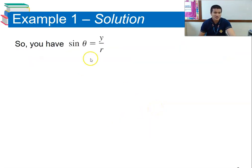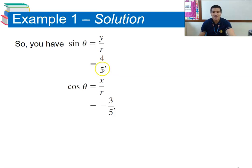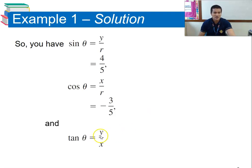Now we can solve for sine, cosine, and tangent. Sine equals opposite over hypotenuse: y/r = 4/5. Cosine equals adjacent over hypotenuse: x/r = −3/5. Tangent equals sine over cosine, which is opposite over adjacent: y/x = 4/(−3) = −4/3.